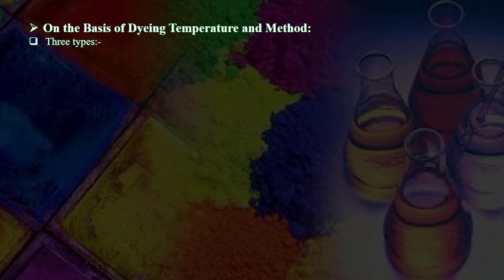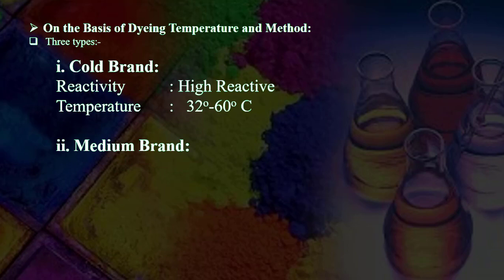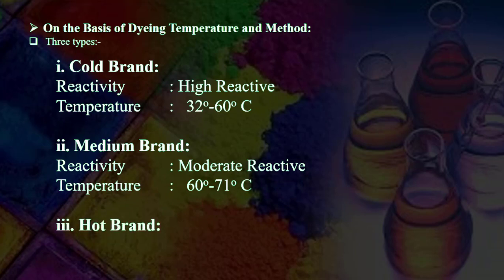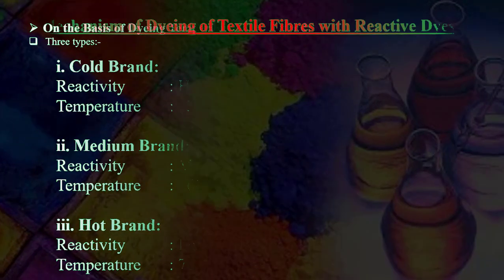Classification on the basis of dyeing temperature and method — three types: (1) Cold brand: high reactivity, temperature 32 to 60°C. (2) Medium brand: moderate reactivity, temperature 60 to 71°C. (3) Hot brand: least reactive, temperature 72 to 93°C.